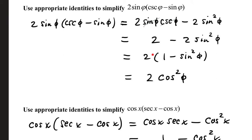This uses a modification of a Pythagorean identity. One Pythagorean identity is sin²θ + cos²θ = 1. Subtracting sin²θ from both sides gives cos²θ = 1 - sin²θ. So we can directly trade in the parentheses, and the expression becomes 2cos²φ.